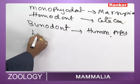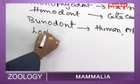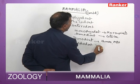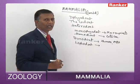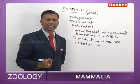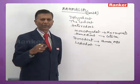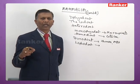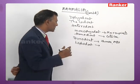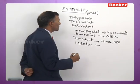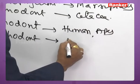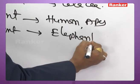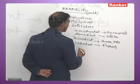Lophodont dentition is noticed in elephants — that is, Proboscidea — where the cusps are long and fused. Such dentition is found in proboscidians.